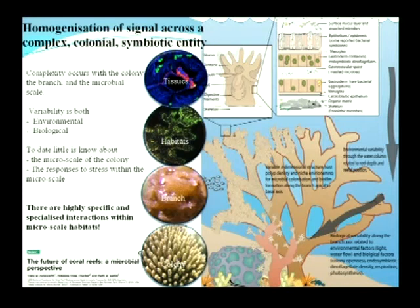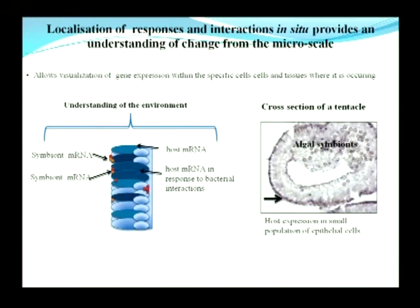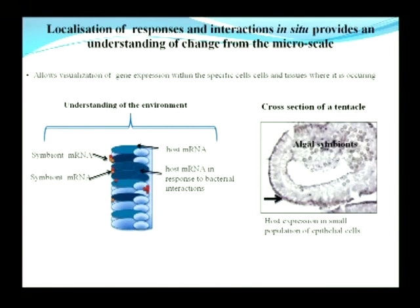We do know that there are specialised habitats within a coral branch and colony. The next step of this research was to tease apart some of these patterns and understand what's happening within the holobiont from a micro-scale. We've used a localisation approach — localising gene expression patterns in situ — which allows visualisation of gene expression within specific cells and tissues, coupled with understanding of symbiont localisation, symbiont expression, host expression, and the micro-environment. Here we have a cross-section of a coral tentacle, with algal symbionts visible as circles, and the dark purple staining showing upregulation of host gene expression in a particular cell type around the edge of the tentacle.